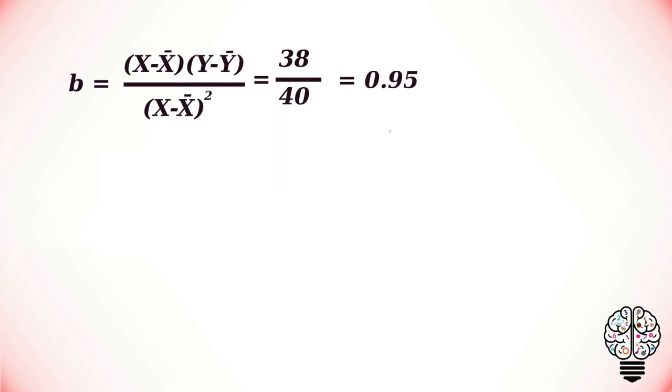And if we do that we get our b value as 0.95. And next to find a value, we have to substitute the mean of y minus the b value into the mean of x. If we do that we get 15.05.